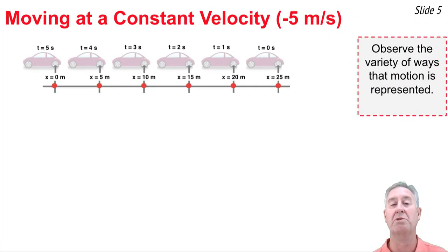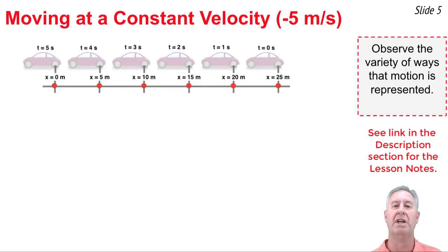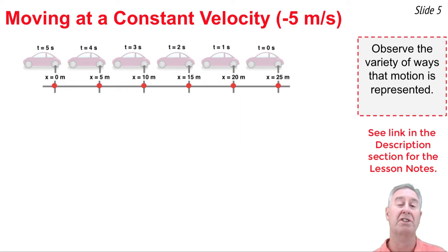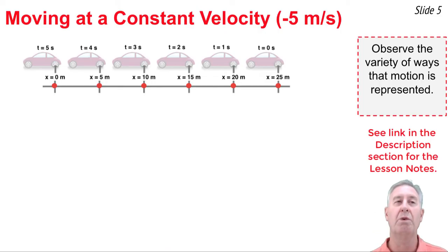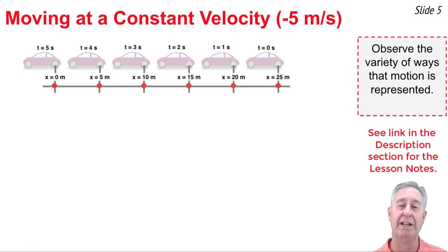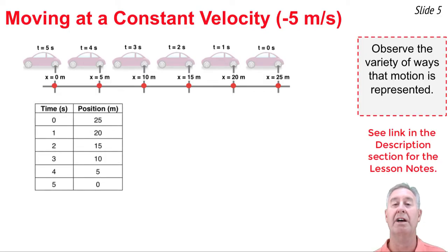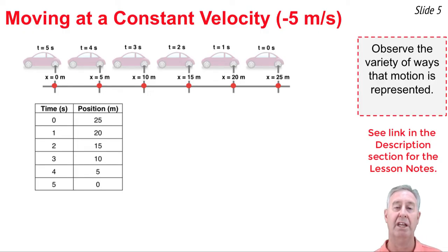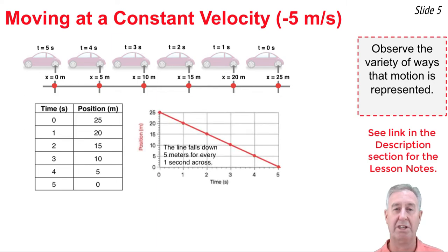Now let's do a third analysis — quite different because it involves a car moving to the left at 5 meters per second, or negative 5 meters per second. We define the origin as the location of the back tire at t equals 5 seconds, marking off 5-meter intervals. Going backwards in time from that position, the car is at 5 meters at 4 seconds, 10 meters at 3 seconds, 15 meters at 2 seconds, and so on. Plotting those six points gives a line that slopes downward — a negative slope — falling 5 meters for every 1 second across.